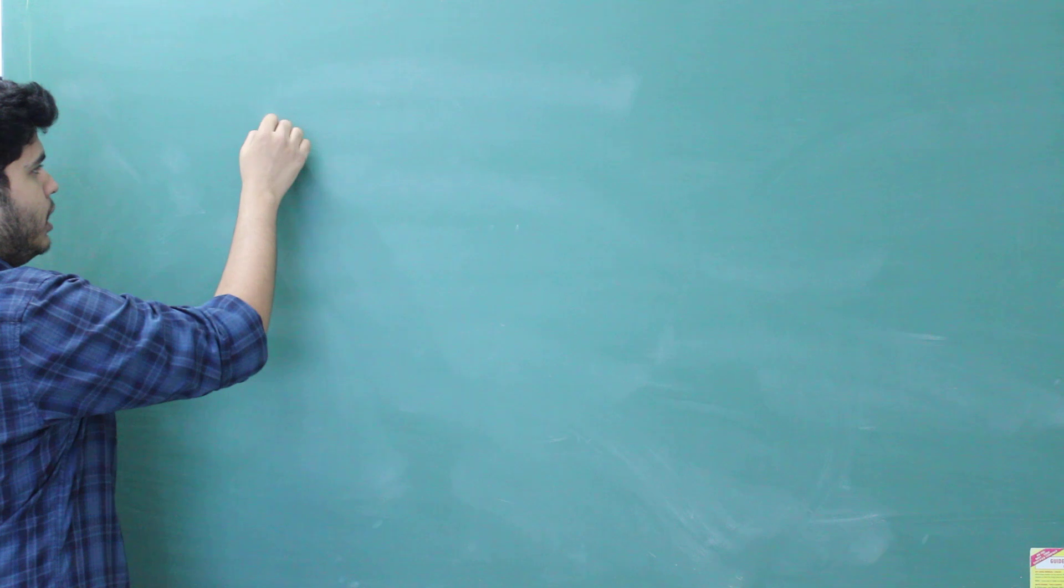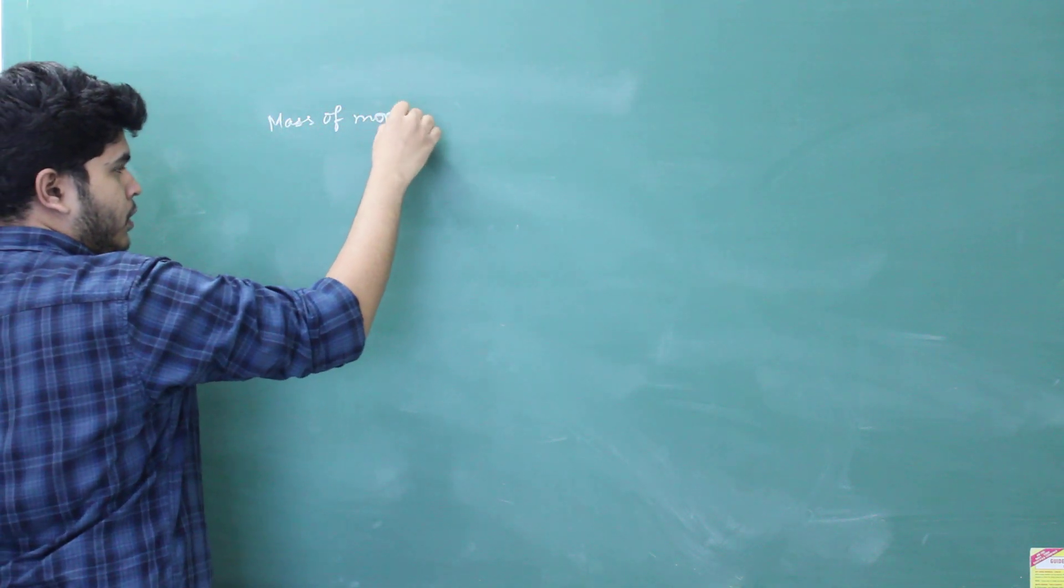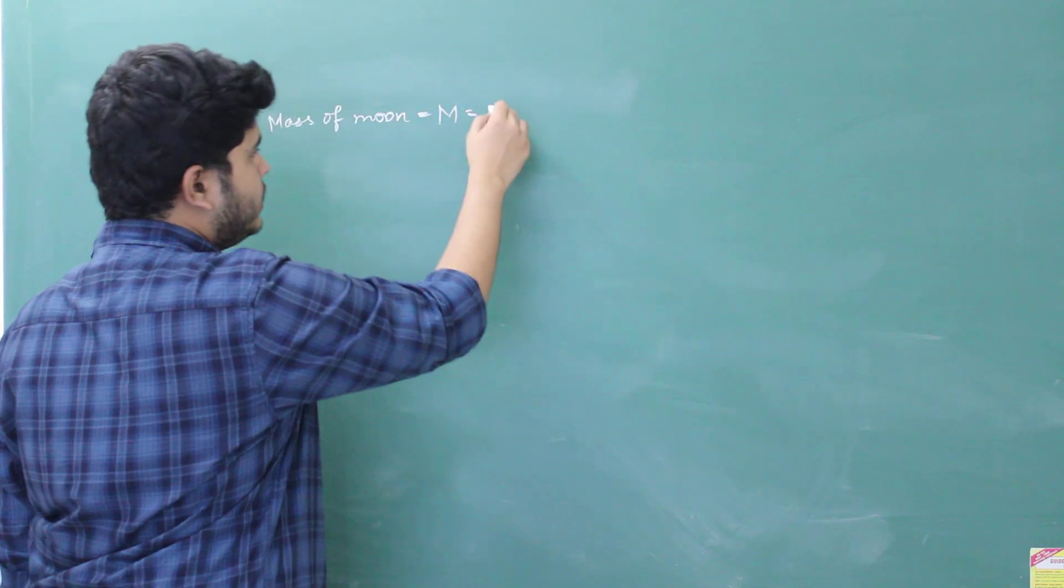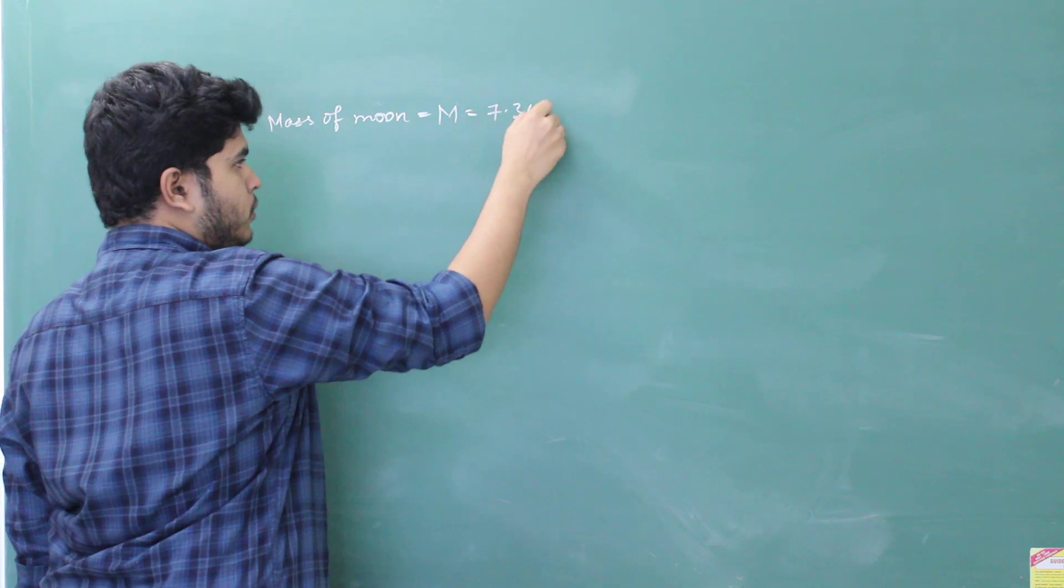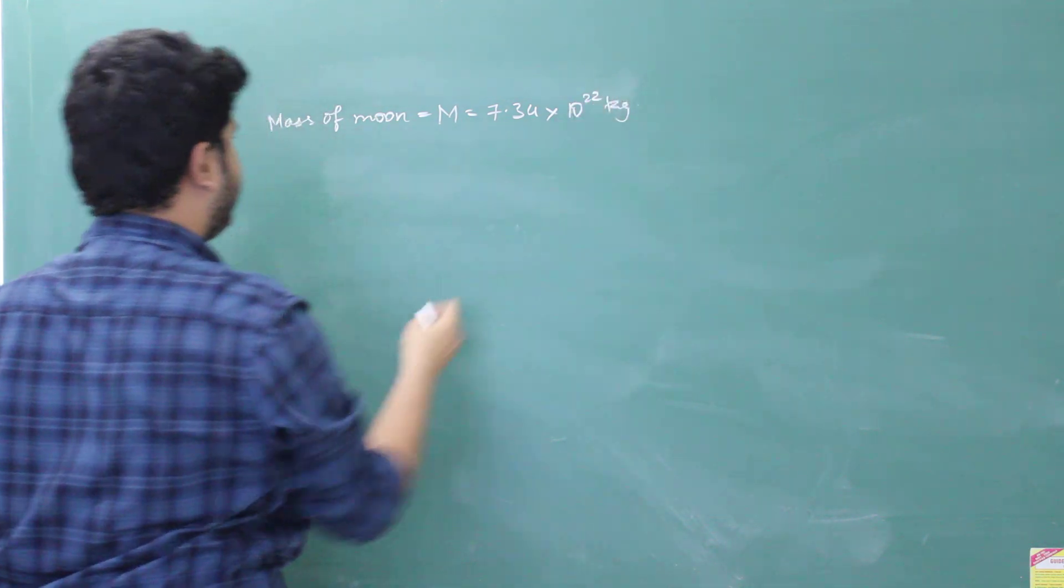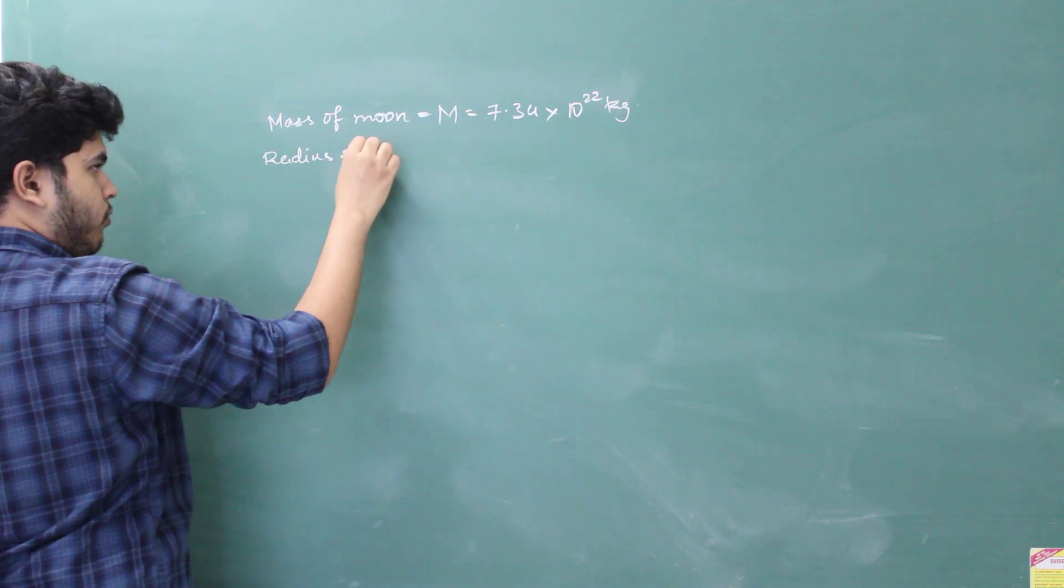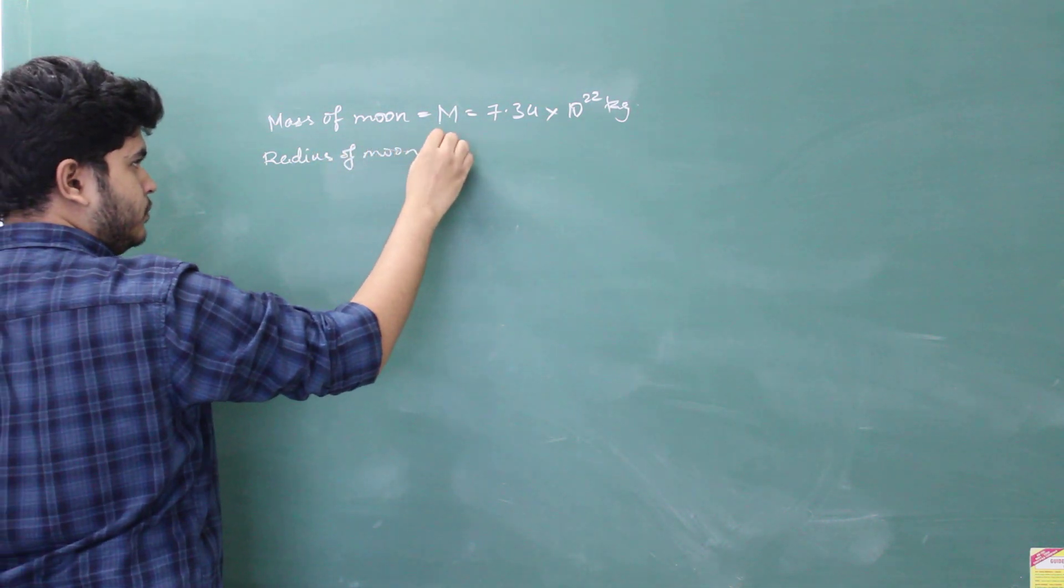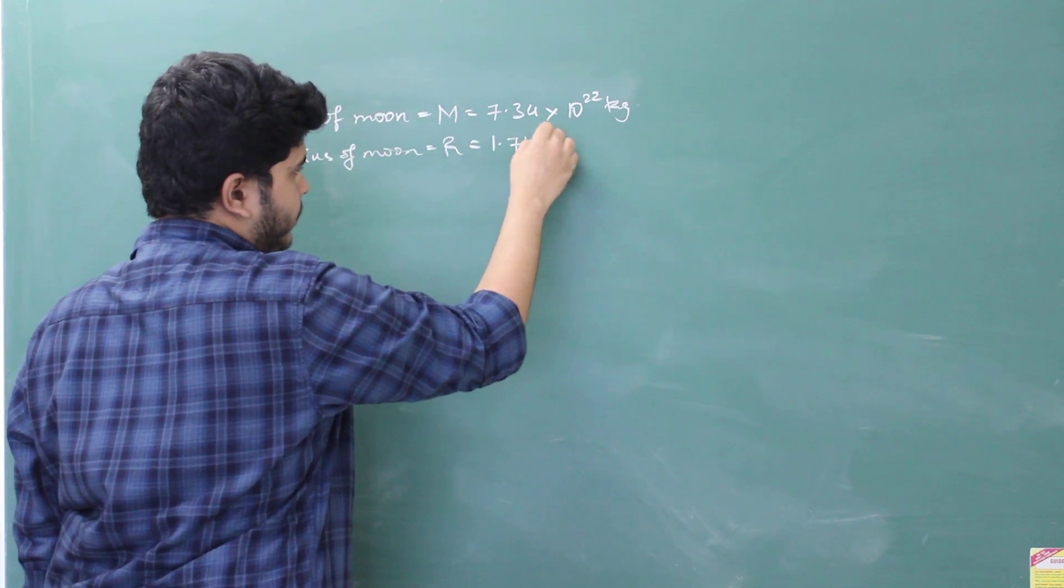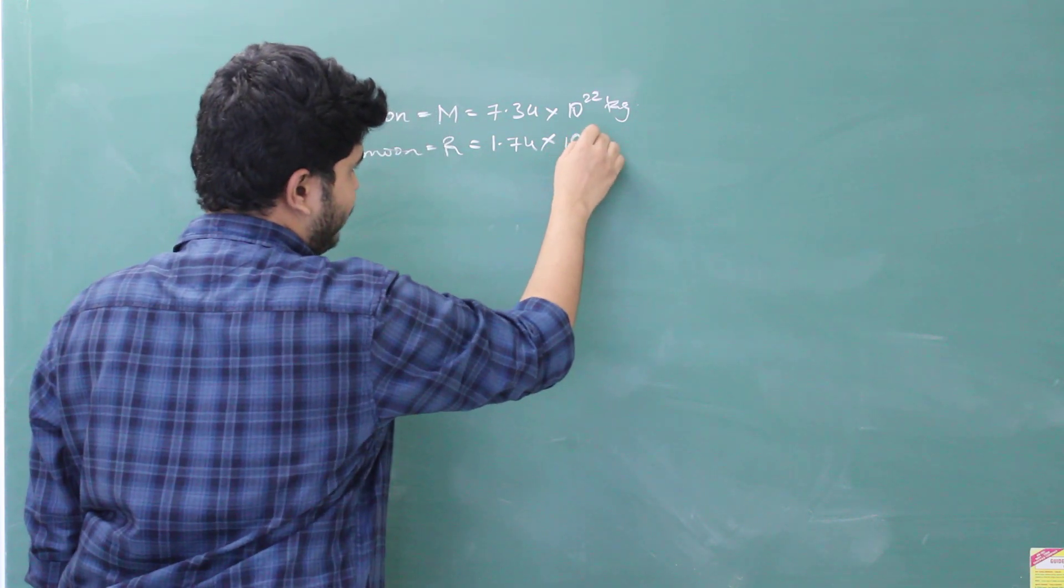So, the question is, mass of Moon is equal to M = 7.34 × 10^22 kg. The radius of Moon, R is equal to 1.74 × 10^6 meters.